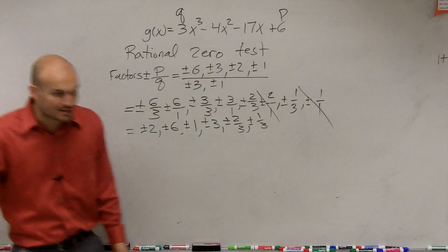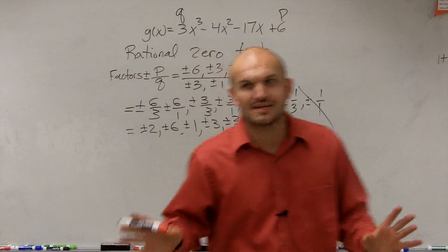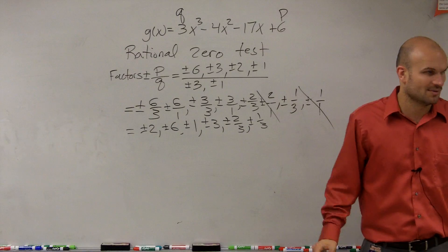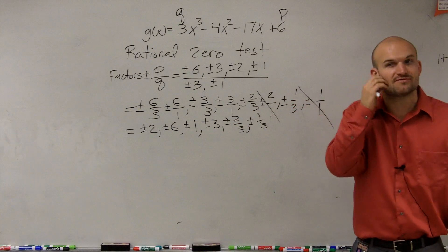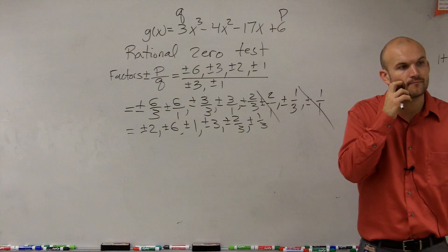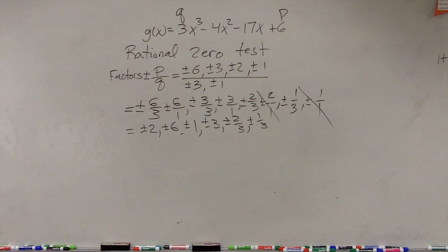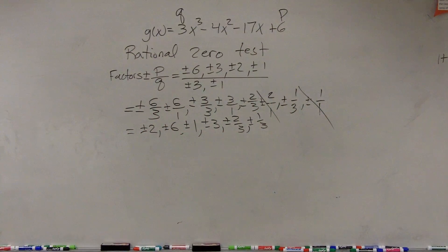So all this is telling us is that if we have a rational number, if we have a rational number as a zero, it has to be one of these values. Okay? That's it. That's all you guys got to know for that. Are there any questions?